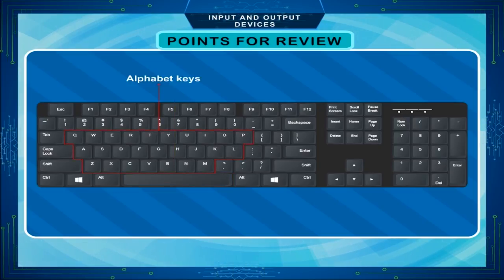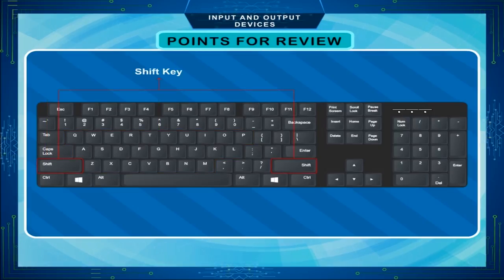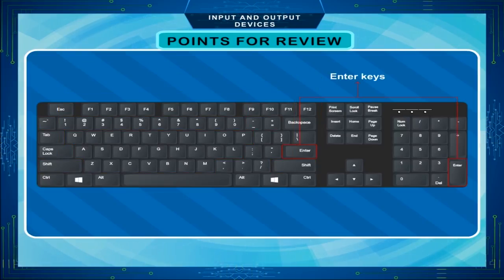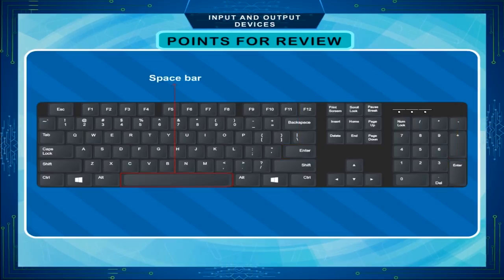The alphabet keys help to type small and capital letters. The Shift key helps to type capital letters and symbols. The Enter key is used to move to the next line. The Space Bar key is used to give space.